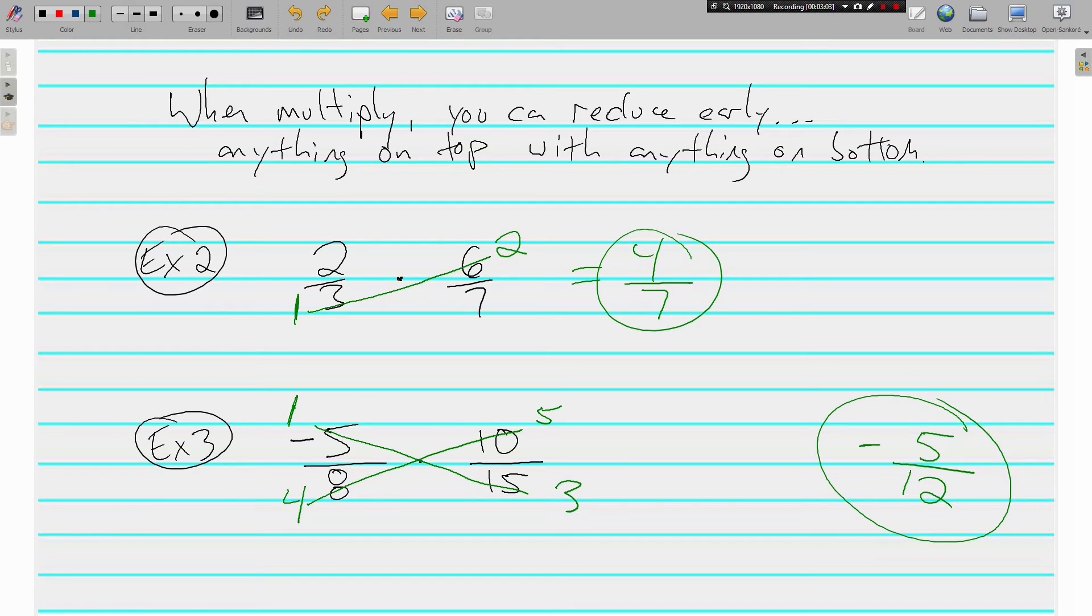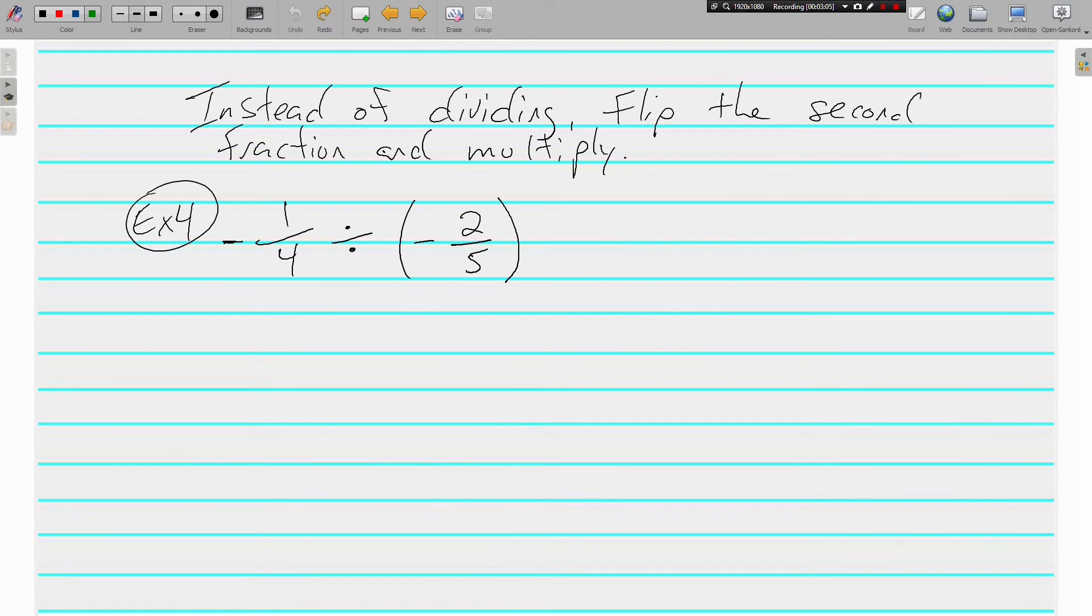So multiplying is actually really easy. And dividing is almost as easy. Instead of dividing, what we're going to do on a division problem is we're going to flip the second fraction and multiply. First off, negative divided by negative is going to be positive. So I'm not worried about that.